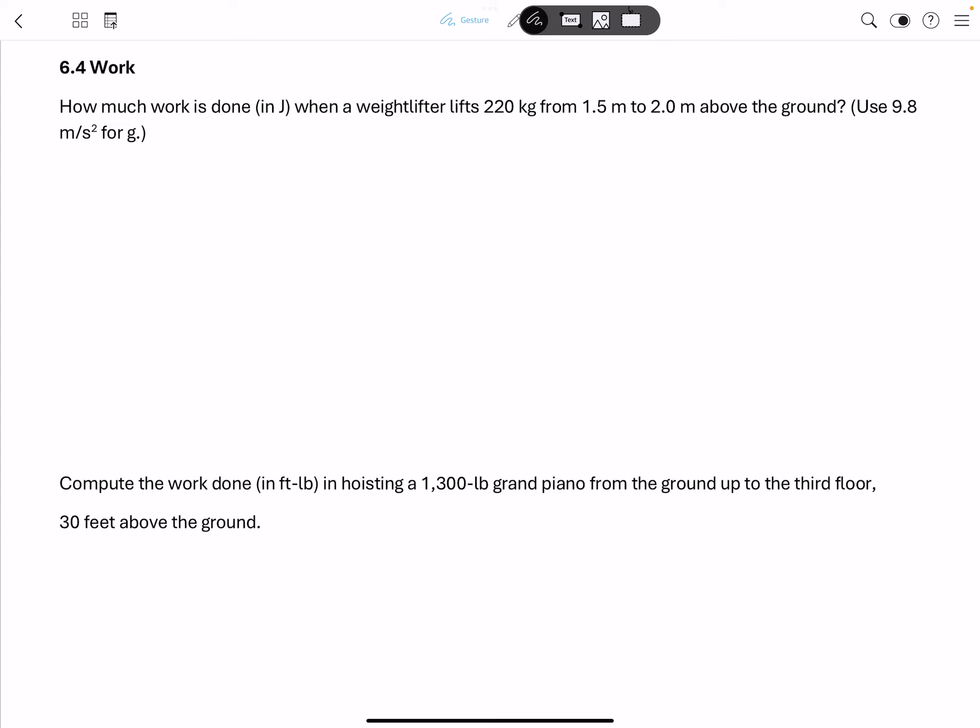The first problem says how much work is done in joules when a weightlifter lifts 220 kilograms from 1.5 meters to 2 meters above the ground. And here we are going to use 9.8 meters per second squared for the gravitational constant.